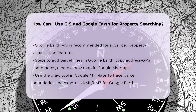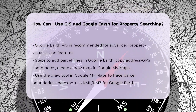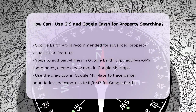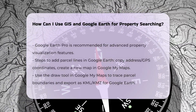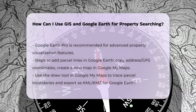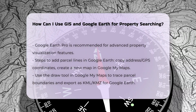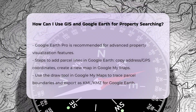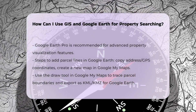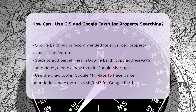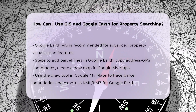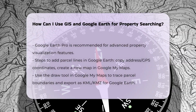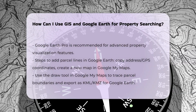Adding parcel lines to Google Earth. To add accurate parcel lines to Google Earth, you can follow a step-by-step process. First, double-click on the property in Google Earth to copy its address or GPS coordinates. Then open Google My Maps and create a new map. Paste the address or GPS coordinates into the search window and zoom in to see the property. Use the Draw tool to trace the parcel boundaries shown on the map, save the layer, and then export it as a KML or KMZ file. This file can be opened directly in Google Earth to display the parcel lines.